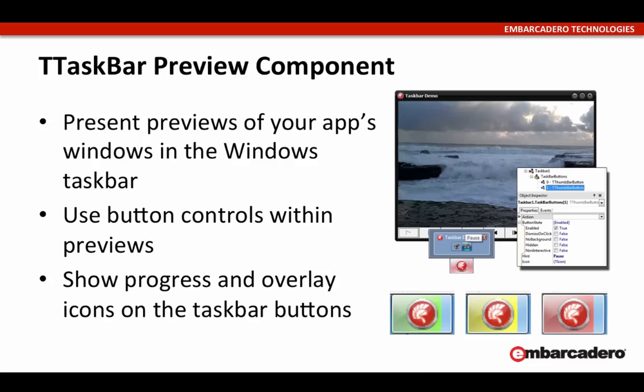This is really important for usability — for the number of times you may have a background task running and you want to indicate to the user how it's progressing without them having to flick back to your application. They can see at a glance just from the taskbar exactly how something is getting on, which means they can get on with other things and be more productive — whether they're still working in your application or multitasking with other applications. The taskbar components really add some great capabilities, so let's get into the demos.